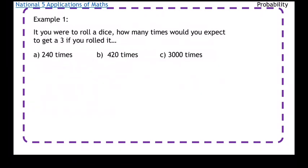For example one, if we were to roll a dice, how many times would you expect to get a three if you rolled the dice 240 times, 420 times, and 3000 times? Okay, so a lot of times I roll dice.